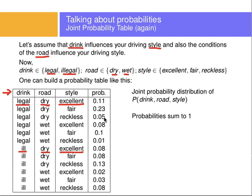Because these are probabilities representing percentages from the data, all these probabilities will sum to 1. This table is called the joint probability distribution of drink, road, and style. With this, we can ask many questions. For example, what's the probability of having legal alcohol levels when road conditions are wet and driving excellently? We look up legal, wet, excellent, and find the probability is 0.08.